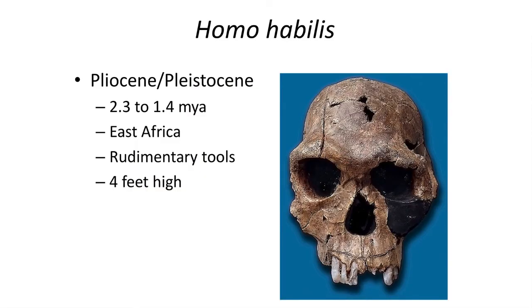Living alongside both Australopithecus and Paranthropus was a third genus, Homo — our own genus — in the form of the species Homo habilis. Homo habilis lived between 2.3 and 1.4 million years ago in a narrow region of East Africa. The species was about 4 feet tall, about the size of a 6 year old. Homo habilis had the largest brain of the three and appears to have made rudimentary stone tools, hence it is called the handyman. The best specimens come from Olduvai Gorge in Tanzania.